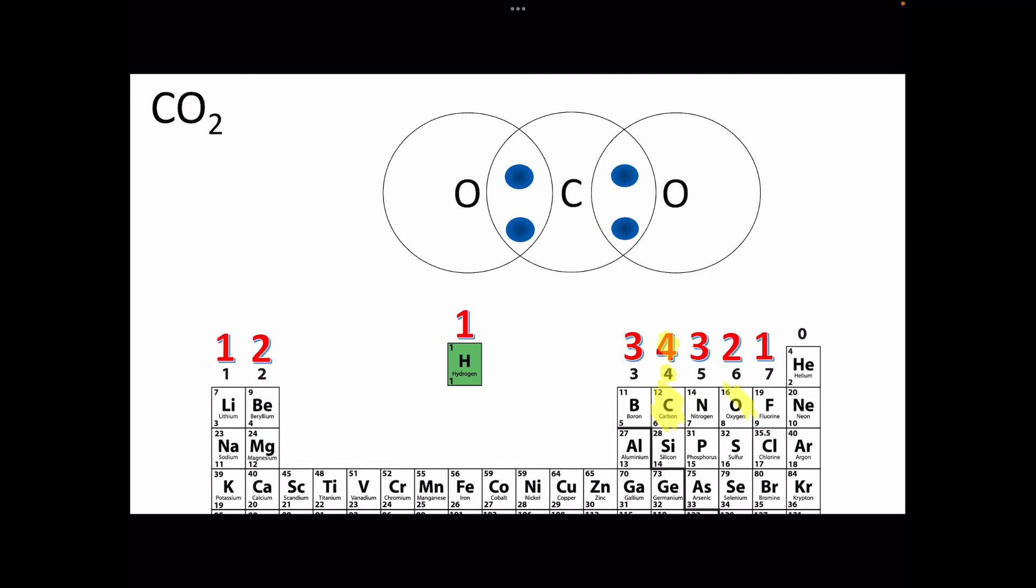Then if I look over at oxygen, oxygen is in group six. There is a six at the top of the column, which tells me there are six electrons in the outer shell. And the two tells me that two out of those six need to be shared. So I'll put two into the shared area and then the other four go around the outside.